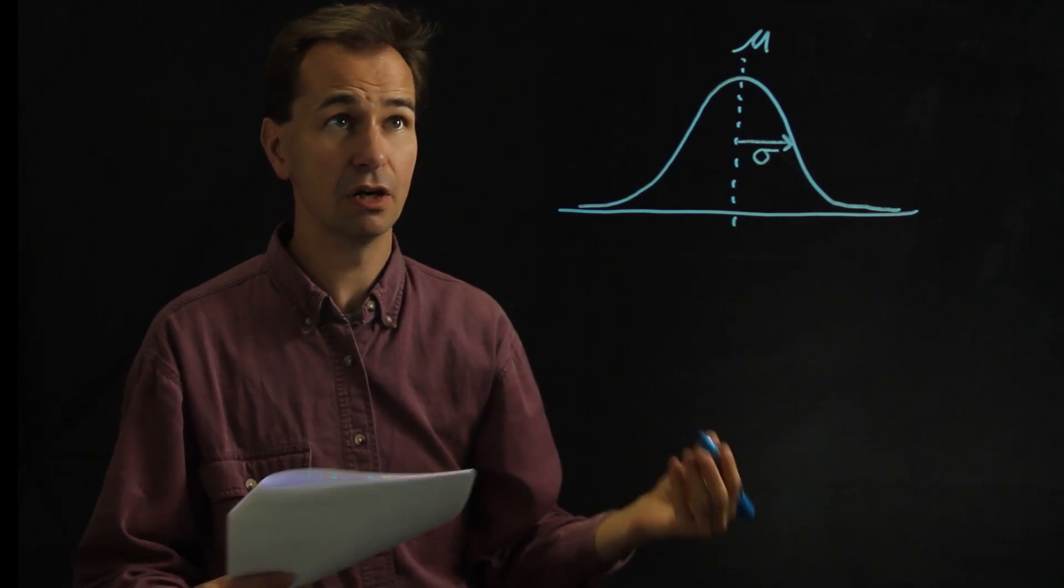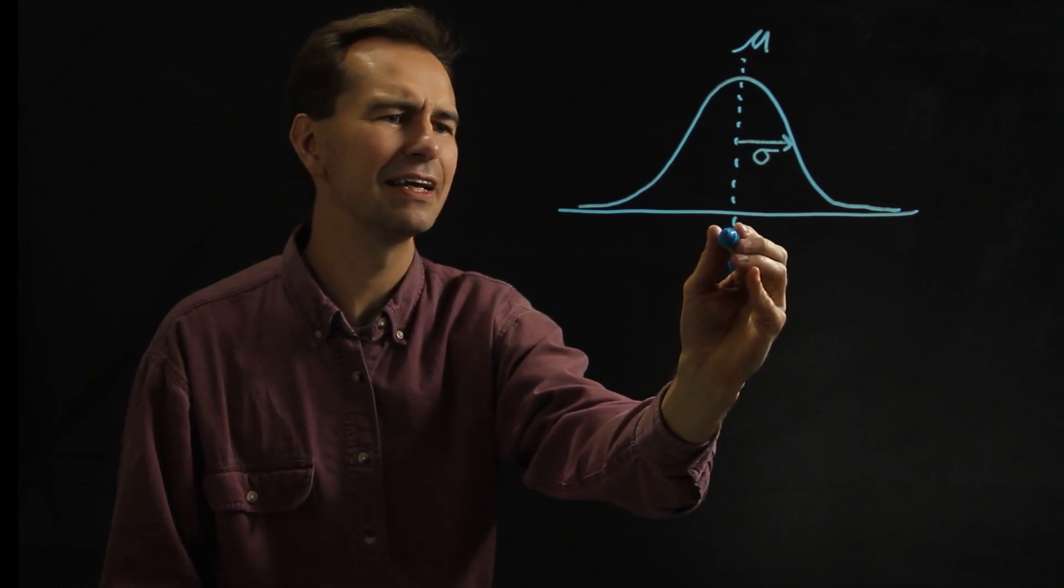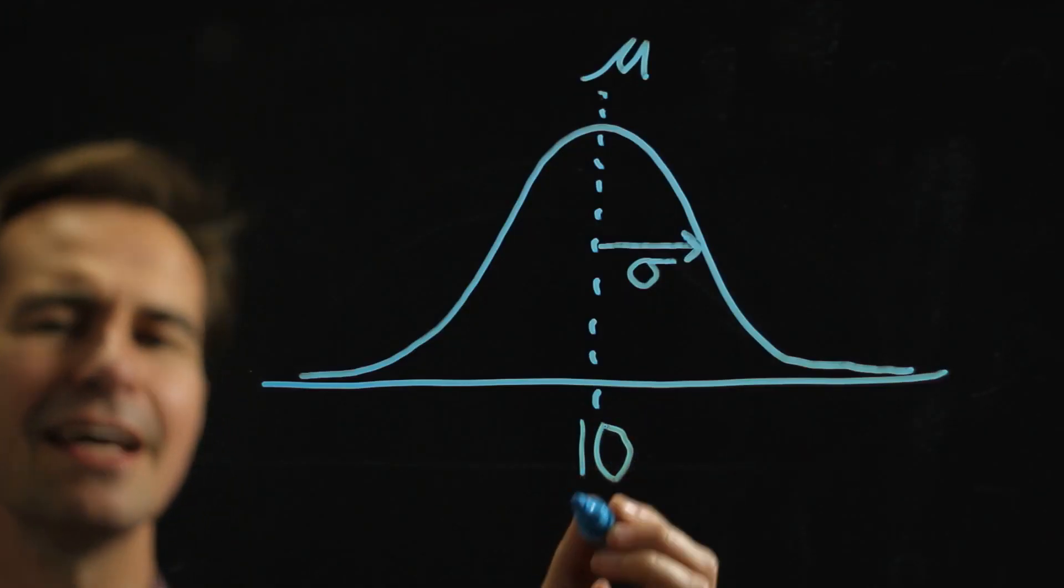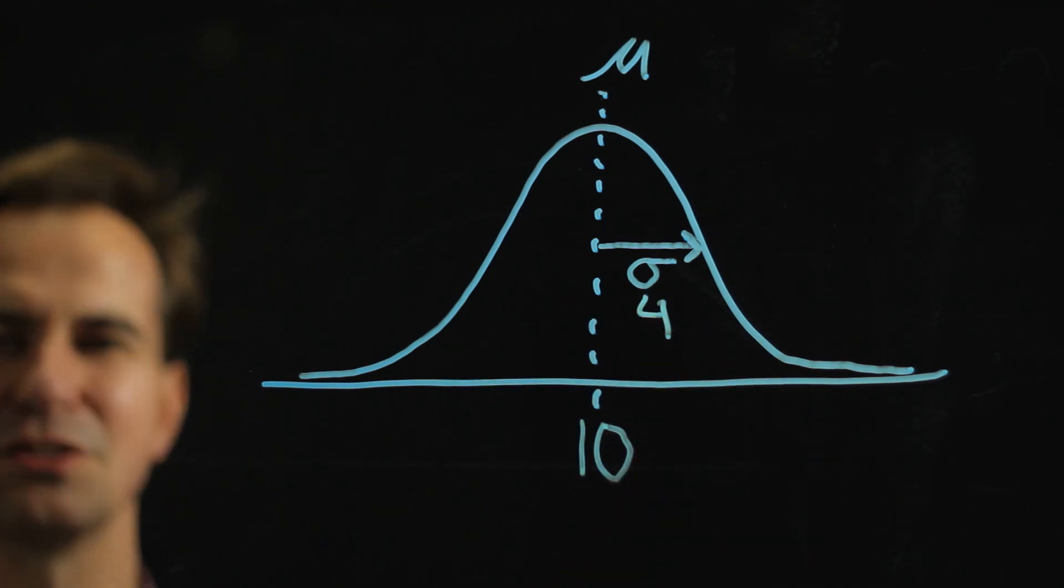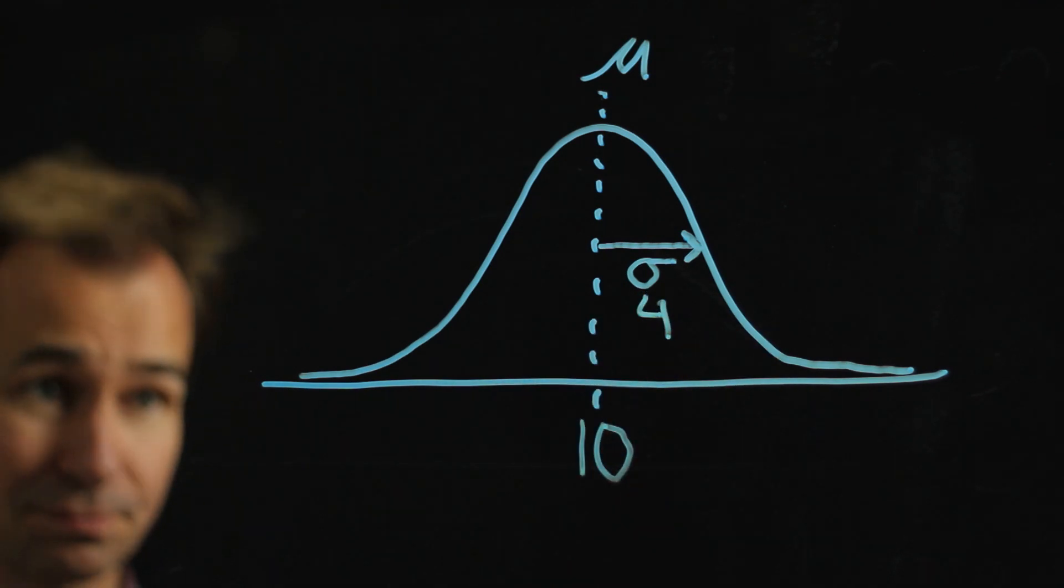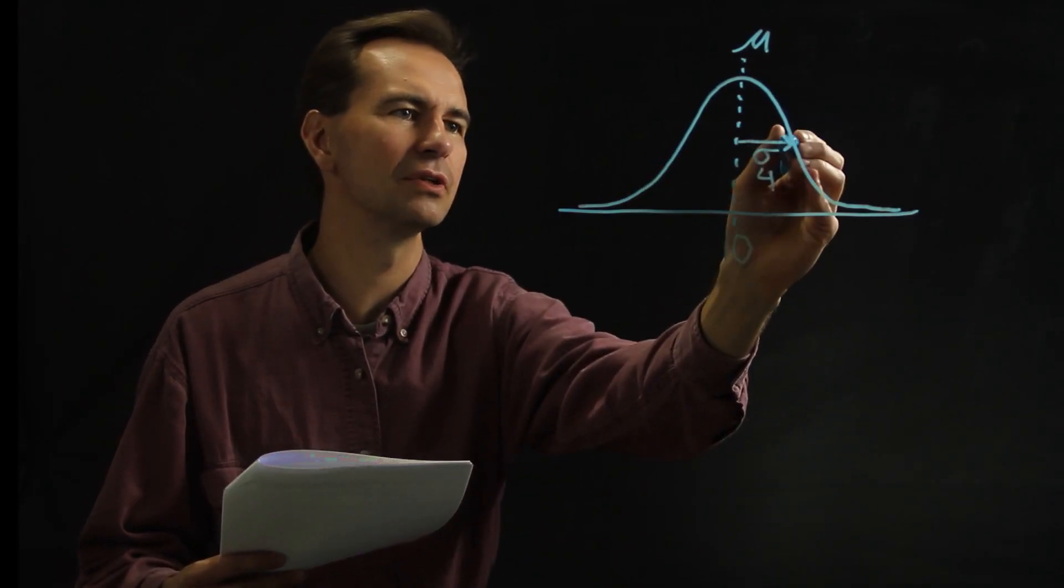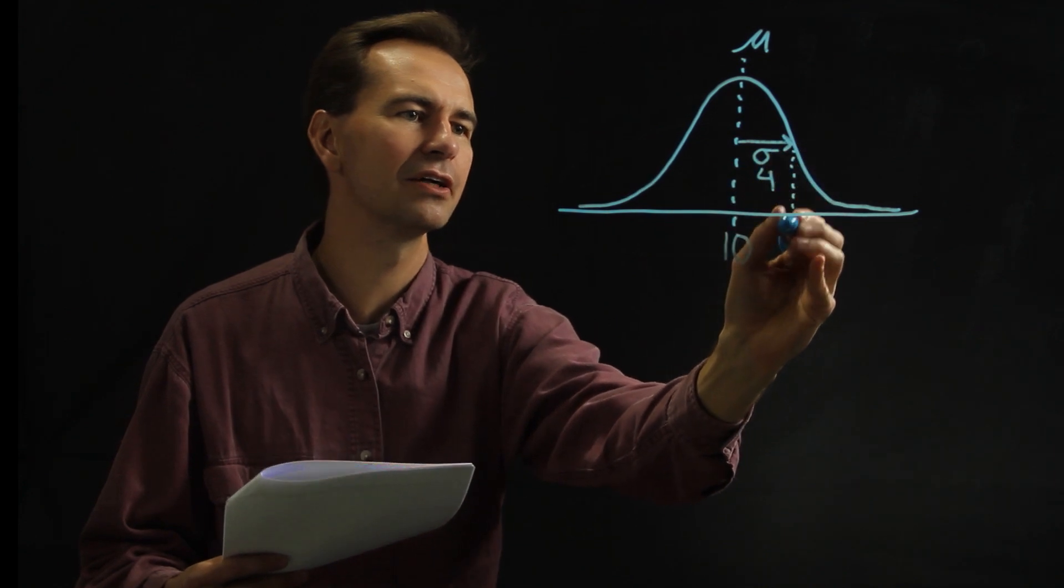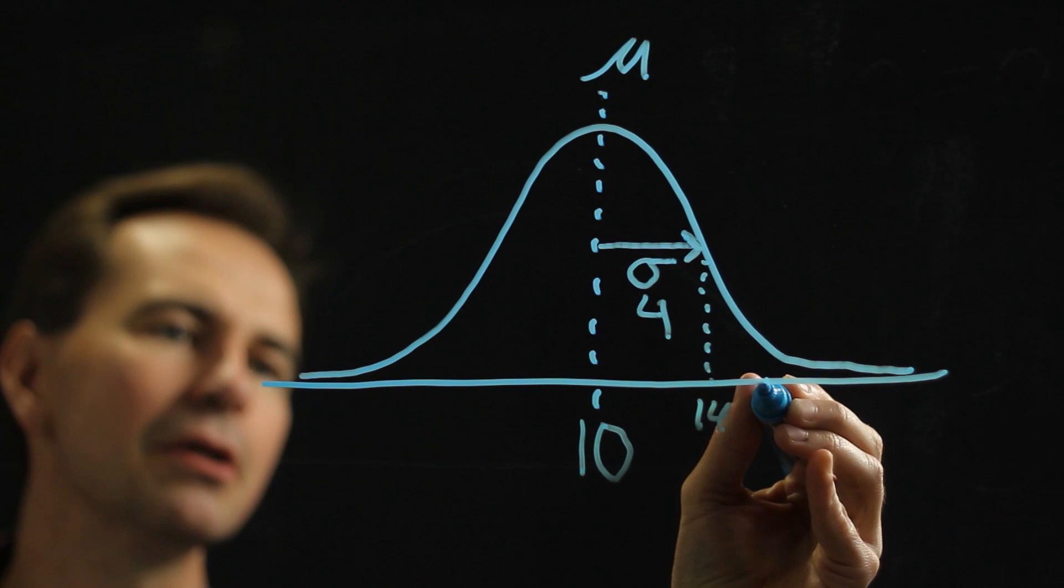And so, for example, let's say that we have a Gaussian distribution and the mean is, say, 10, and the standard deviation is maybe 4. So let's say that there's a point on this curve at 16. Right here we would be at 14, and so 16 would be about right there.